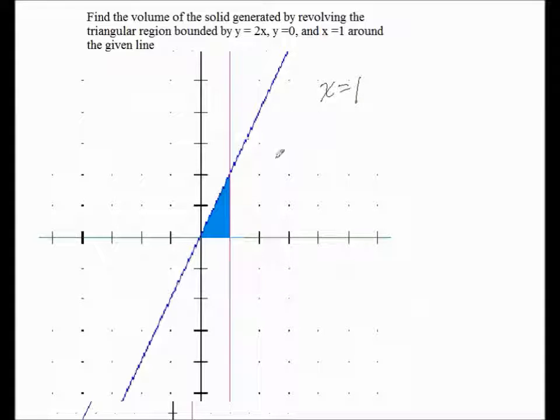Well, the line x equals 1 is this purple line right here. So we're going to see what happens when this revolves around there. Now you have to get your imagination in tune to see what's going on. If you can imagine this thing rotating around,